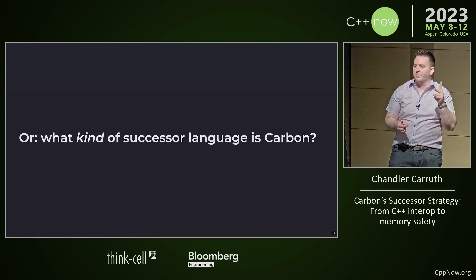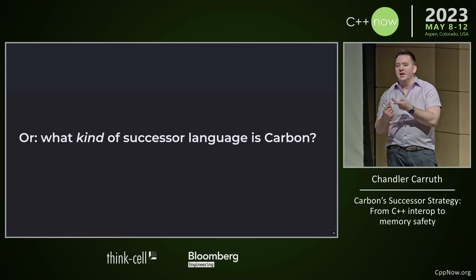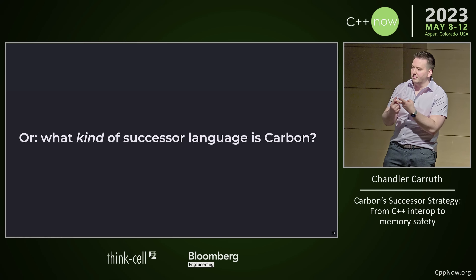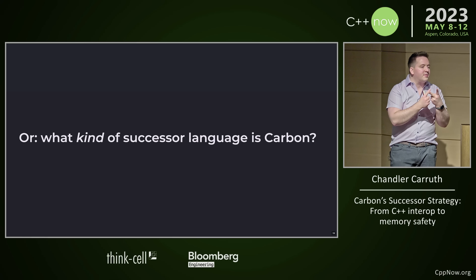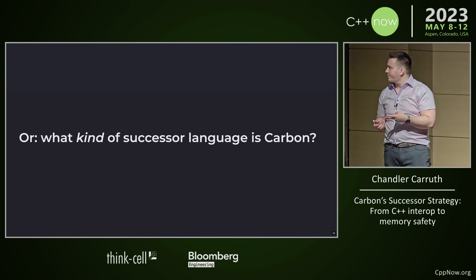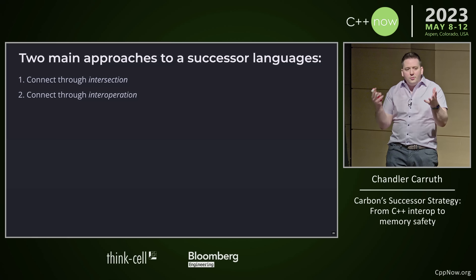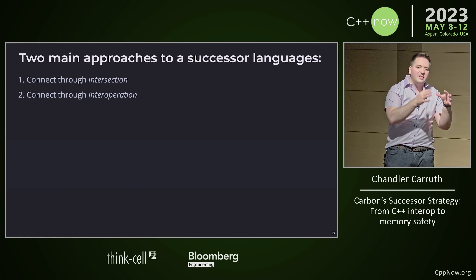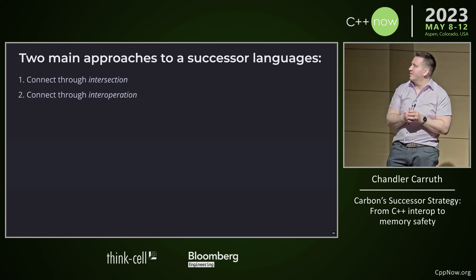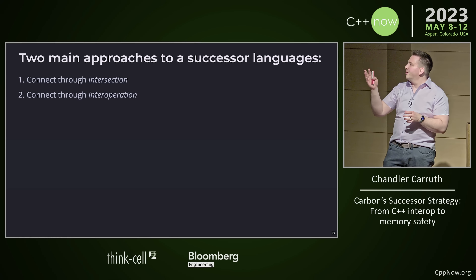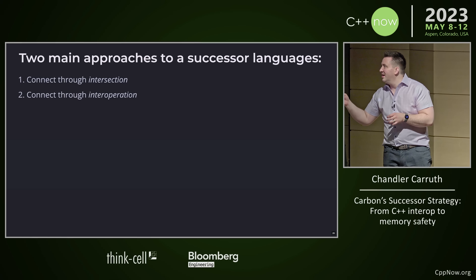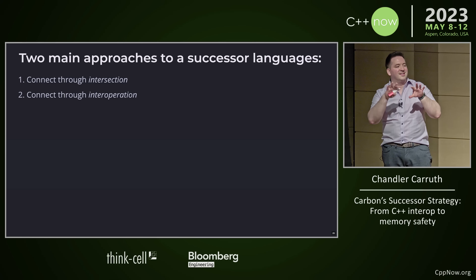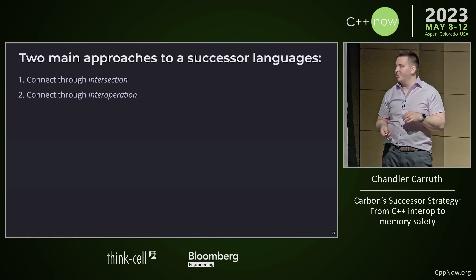Because I only had two criteria for successor language: seamless access to the ecosystem and a credible ability to replace the development activity for some body of users. There are a bunch of different ways to address that. The two main ones I see are centered around how they actually deliver that seamless access to the C++ software ecosystem. One of them is connecting through intersection, and the other one is connecting through inter-operation. I think this is the better distinction to draw between the successor approaches.